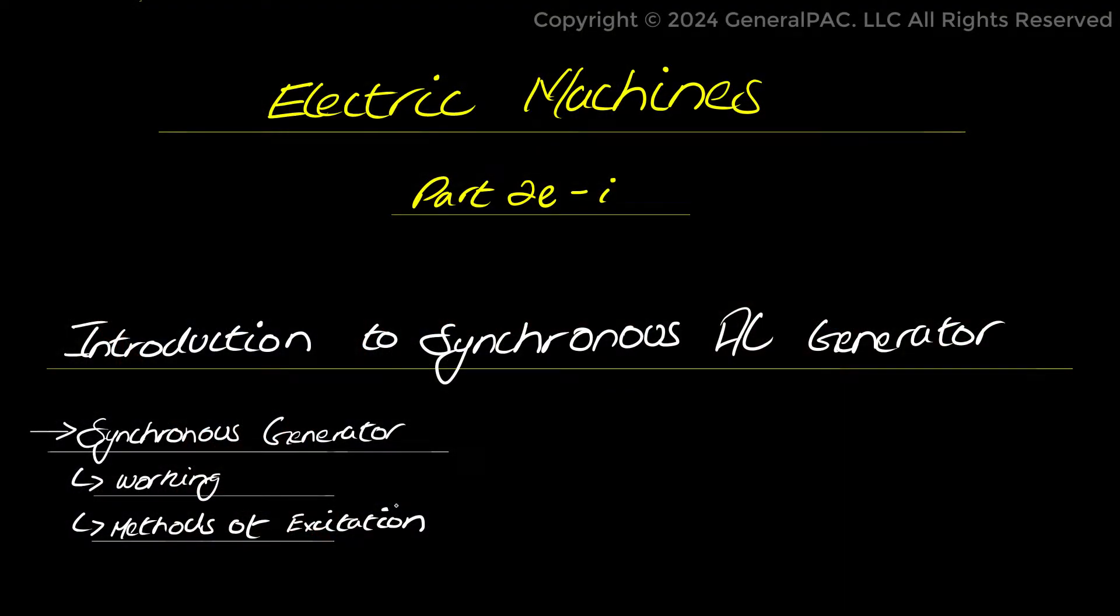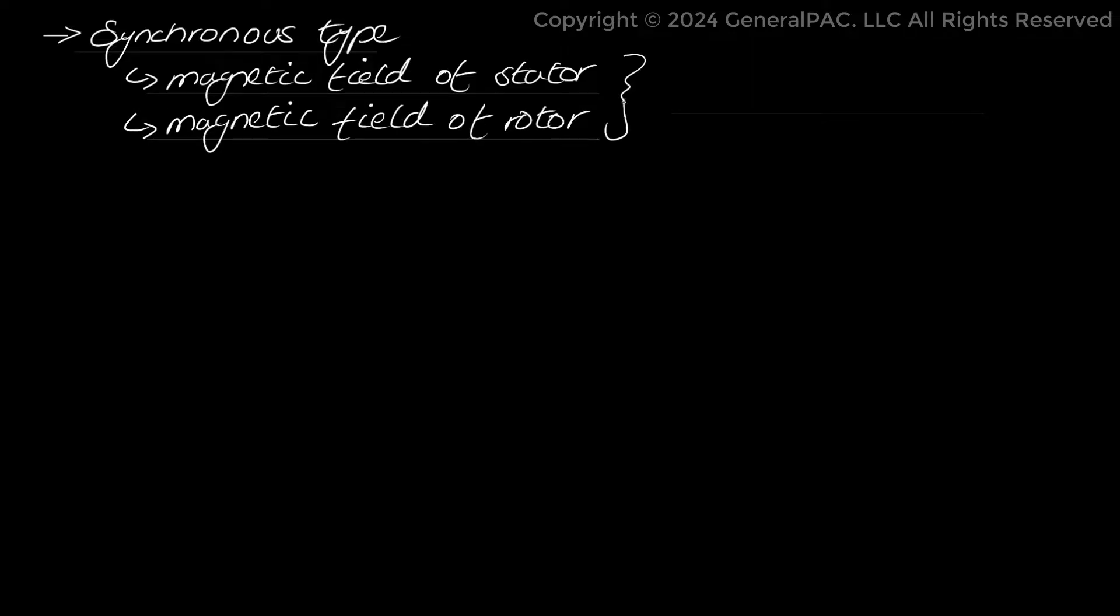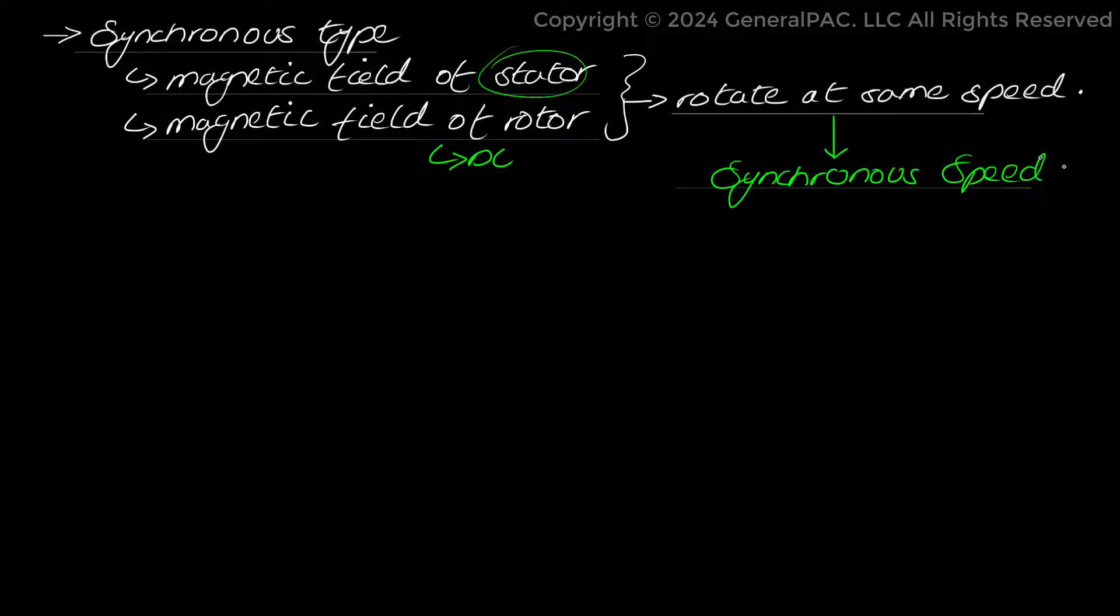Most of the generators used in electrical generating stations are of synchronous type. Synchronous generators are those in which both magnetic field of stator and rotor rotate at the same speed, that is synchronous speed, hence the reason they are termed as synchronous generators.